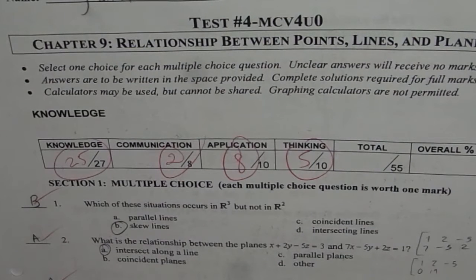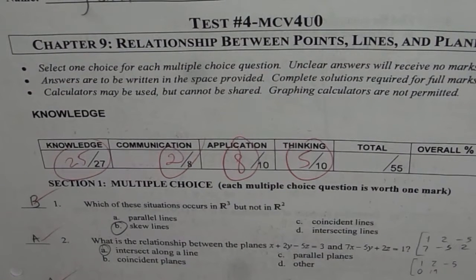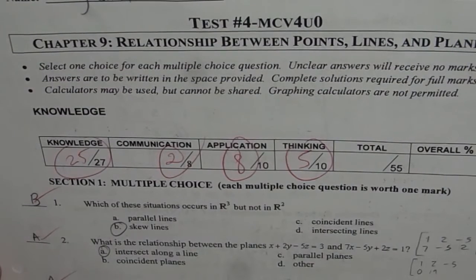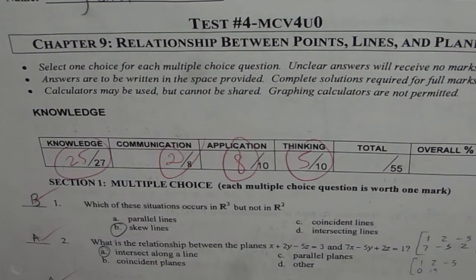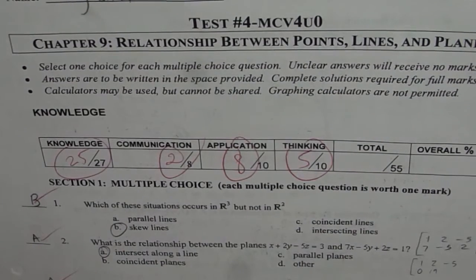I am Adil Kumar, sharing with you a very recent test paper on vectors. It is Chapter 9, Relationship Between Points, Lines and Planes. Once we understand a test paper, it is a good review for us. In most of my videos, you will find questions from the test papers. Let us look into these multiple choice questions one by one.